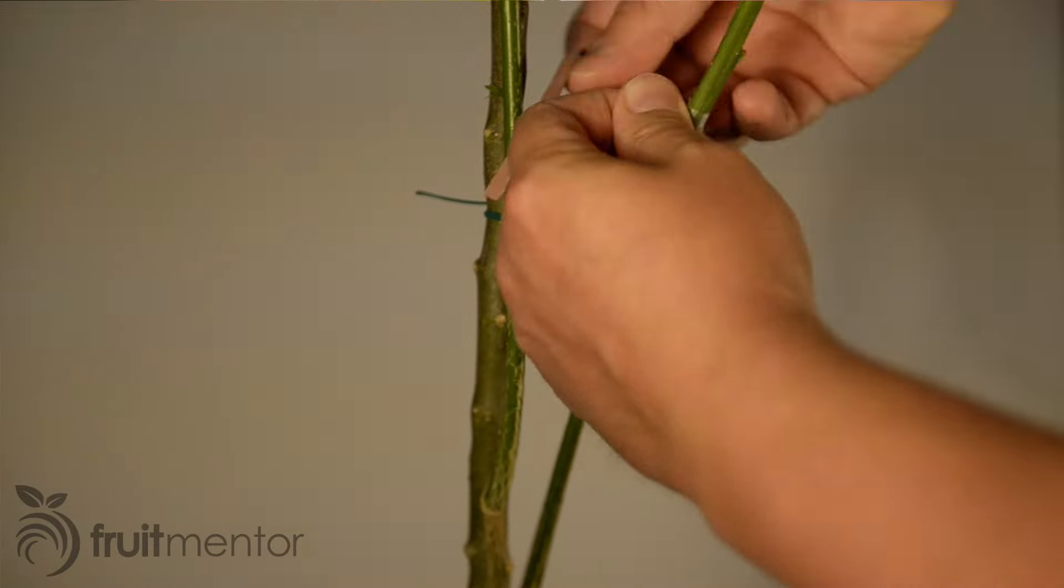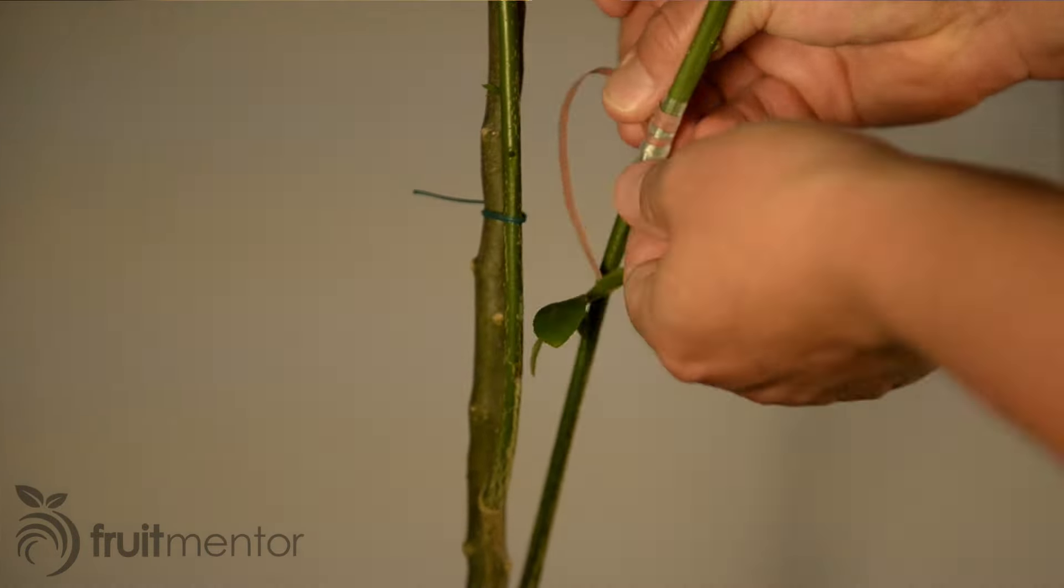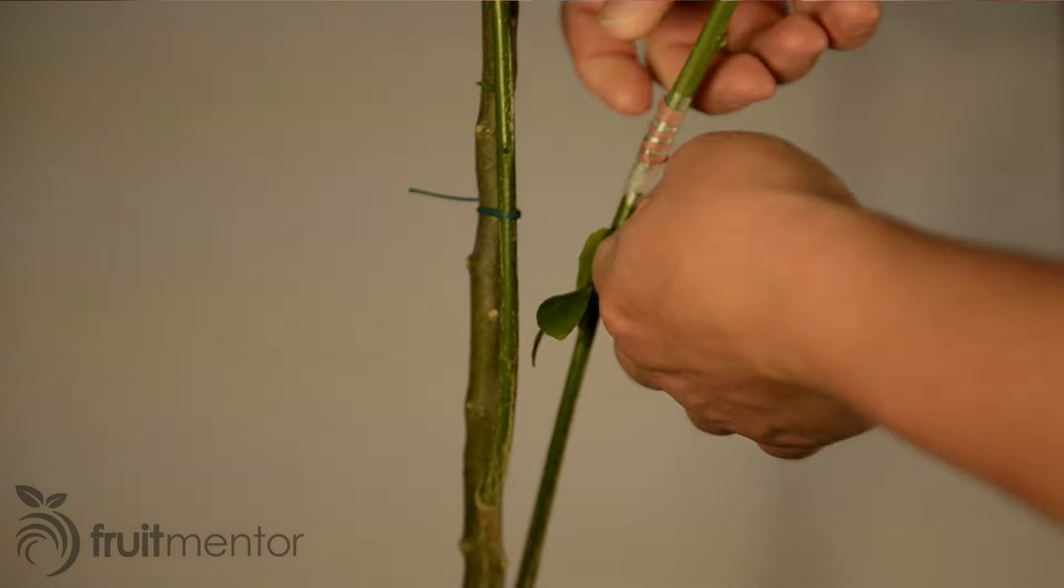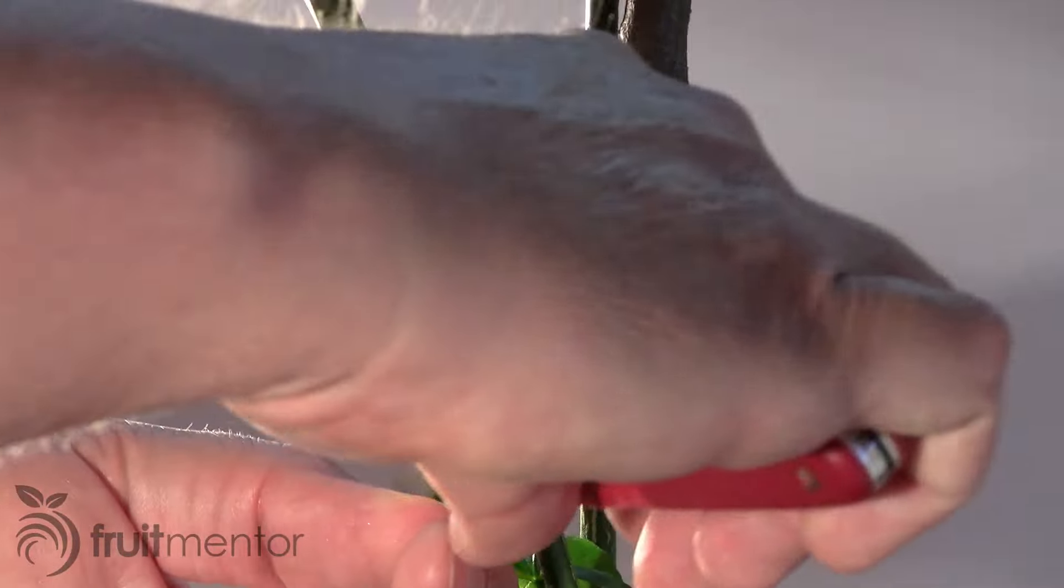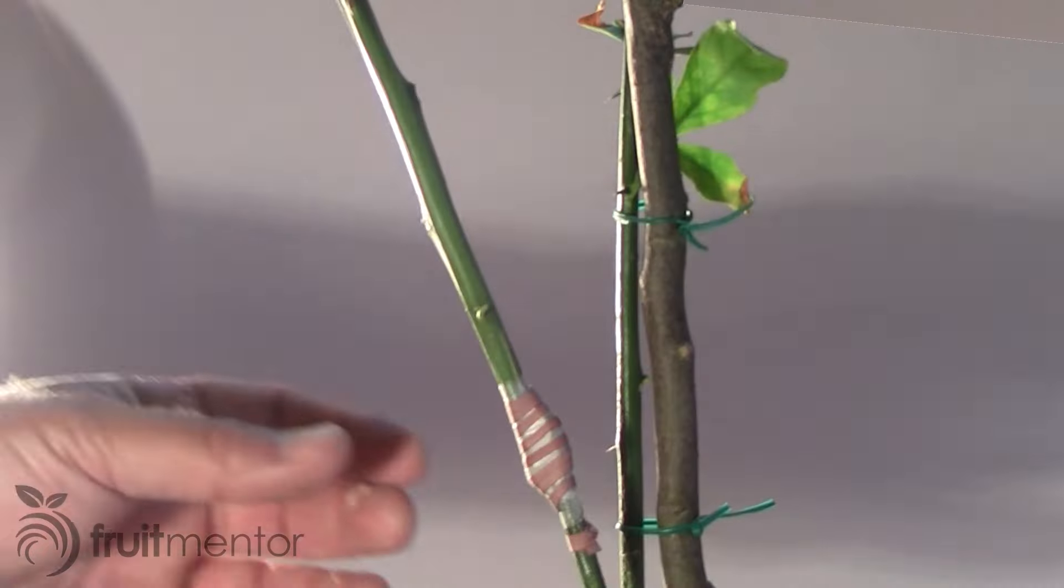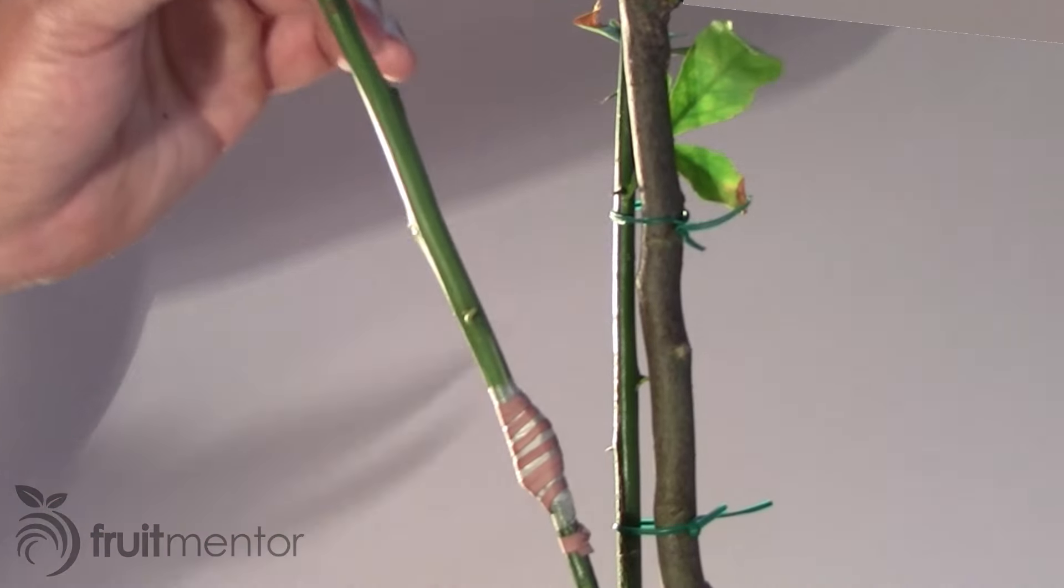In order to ensure close contact between the cambium layers and to strengthen the graft while it is healing, I wrap the graft with a rubber band. Here I prune the scion to leave three or four buds.